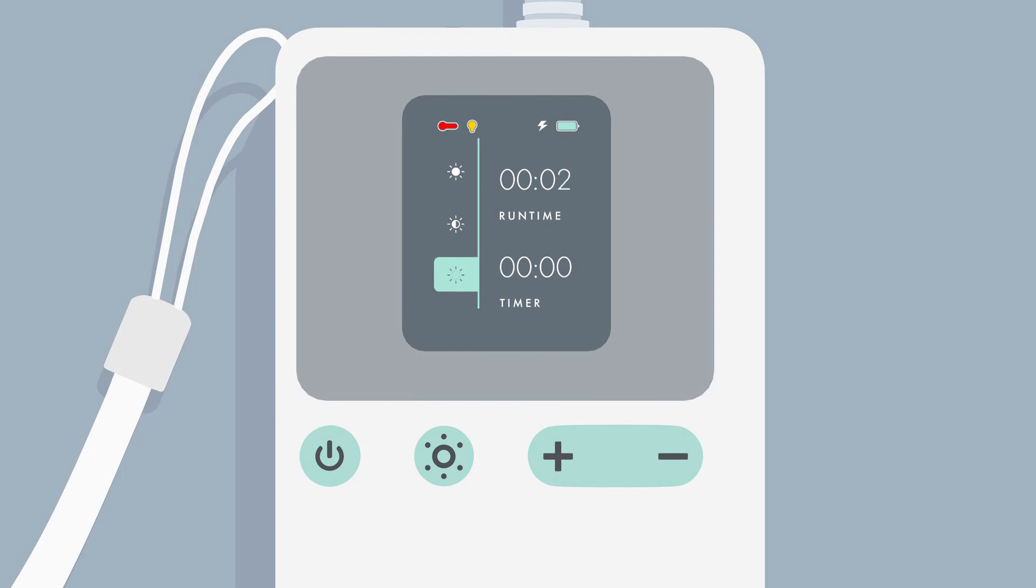Operating Time shows the total elapsed time the light pad was on for the current session. Remaining Time displays the remaining time on the timer mode.